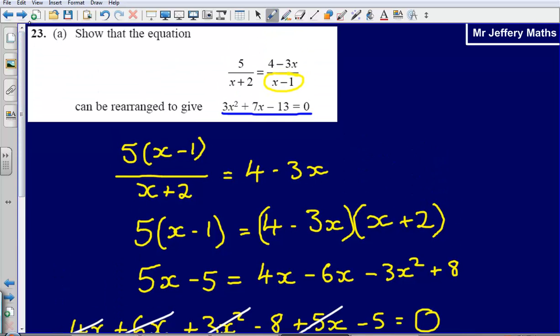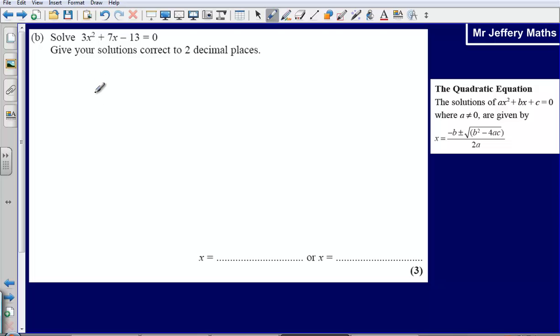Now part B asks you to solve 3x squared plus 7x minus 13 equal to 0. Give your solutions correct to two decimal places. The big thing here is this phrase, this gives you a big clue that you are supposed to use the quadratic formula to solve this equation.